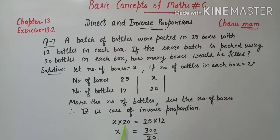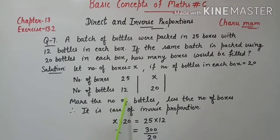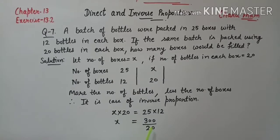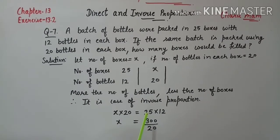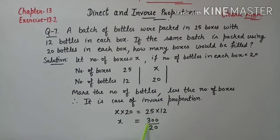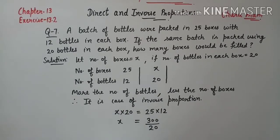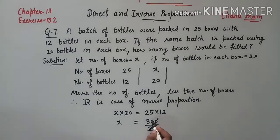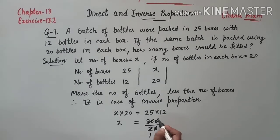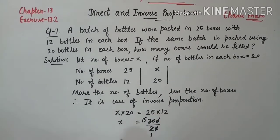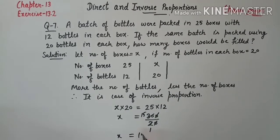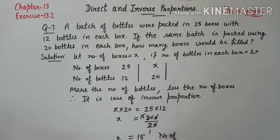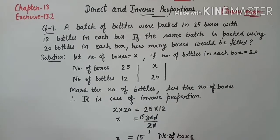तो हम given का use करेंगे x की value find करने के लिए: x × 20 = 25 × 12. Simplify करेंगे: 25 × 12 = 300, और 20 divide में आएगा: 300 ÷ 20 = 15. तो x की value 15 आई है — number of boxes कितने आए हैं: 15 boxes।